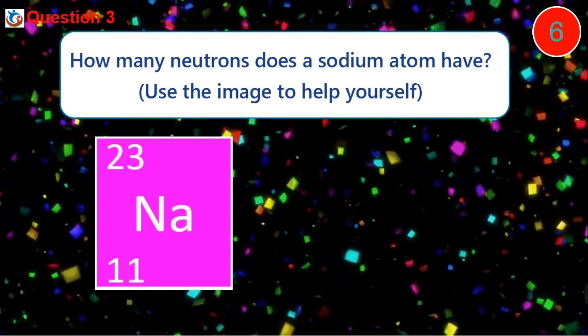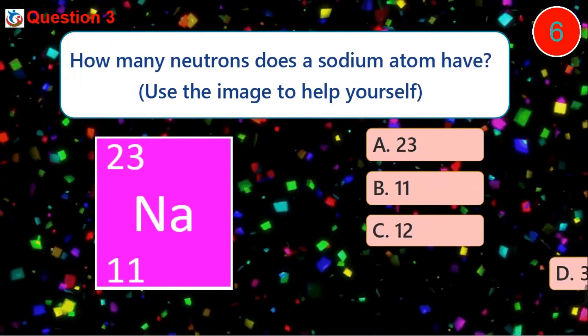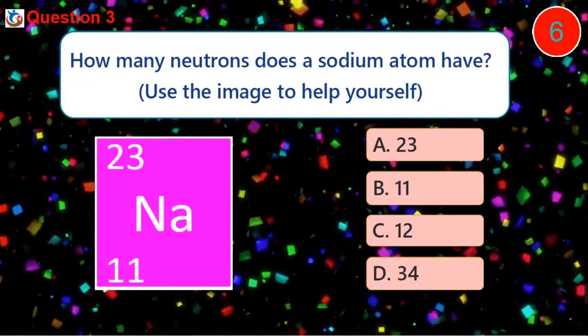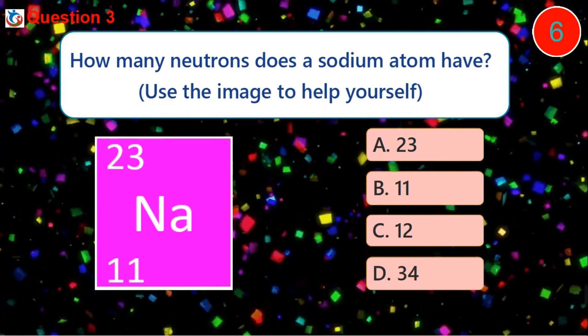Question 3. How many neutrons does a sodium atom have? Use the image to help yourself. A. 23 B. 11 C. 12 D. 34.